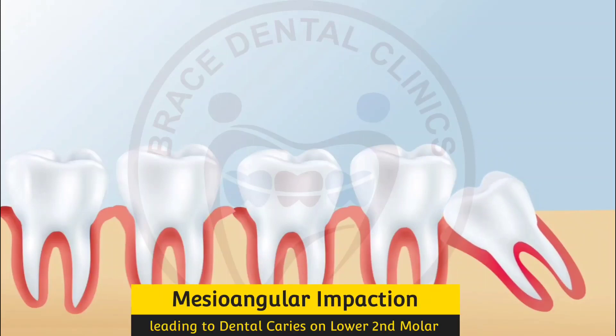Mesoangular impaction is a common type of third molar impaction. In this type of impaction, the tooth is angled towards the front of the mouth, with the top of the tooth pointing towards the second molar.